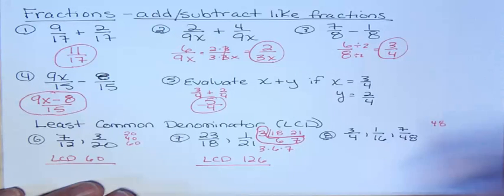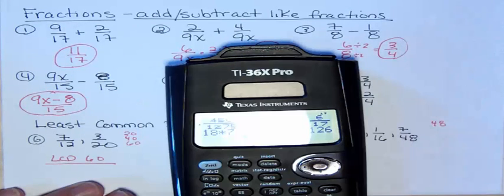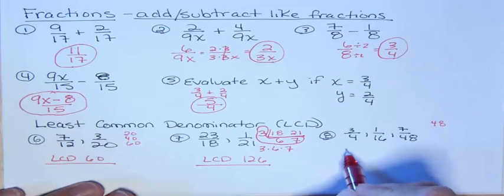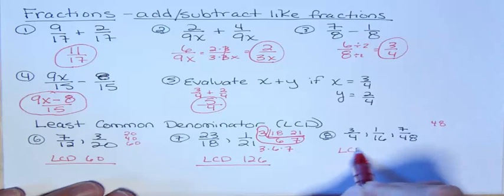Does 16 go into 48? It does. If you don't know, you just take 48, divide by 16, and go, wow, it does go in there. It goes three times. So actually, our least common denominator here is 48.